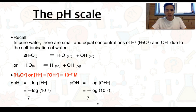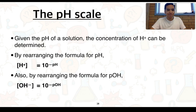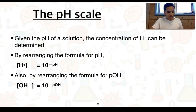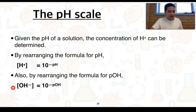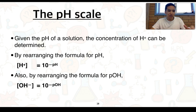We can also measure what we call the pOH, which is the relative concentration of hydroxide ions in solution. The formula looks virtually the same as the formula for pH, and plugging in the values gives pOH equal to 7 as well. Given the pH of a solution, the concentration of H+ can be determined by rearranging the formula: concentration of H+ or H3O+ equals 10 to the power of negative pH. Similarly, the concentration of OH- equals 10 to the minus pOH. Substituting values gives concentrations equal to 10^-7 mol/L, which you can verify.